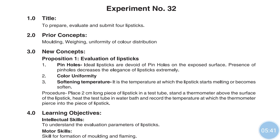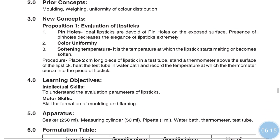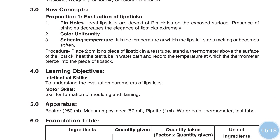For the softening temperature test, take a two-centimeter long piece of the lipstick and keep it in a test tube. Place a thermometer above the surface of the lipstick in the test tube. Heat the test tube in a water bath and record the temperature at which the thermometer pierces into the piece of lipstick. That is how you perform the softening temperature evaluation test.